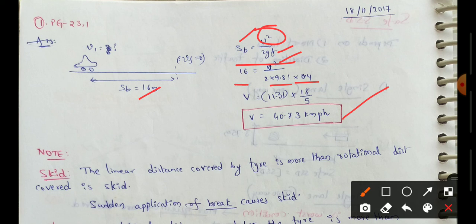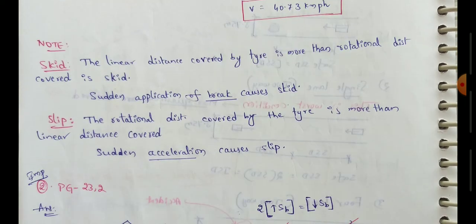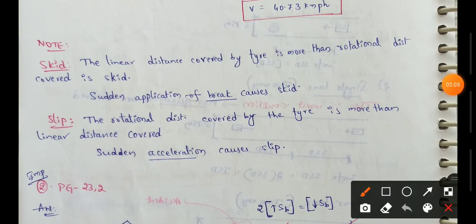Skidding is defined as the condition where the linear distance covered by the tire is more than the rotational distance covered.